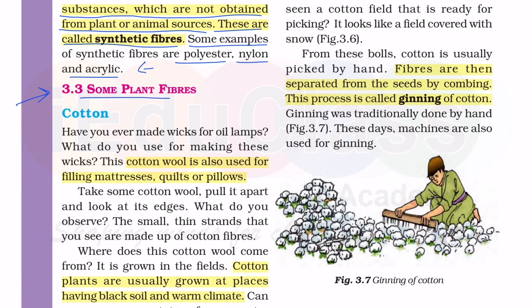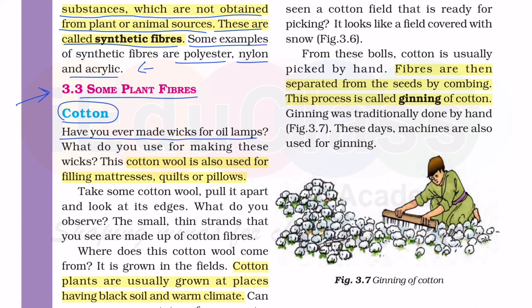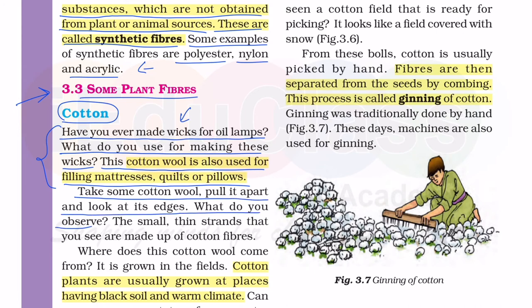Next topic - some plant fibers. Have you ever made wicks for oil lamps? This cotton wool is also used for filling mattresses, quilts and pillows. Take some cotton wool, pull it apart and look at its edges - what do you observe? The small thin strands that you see are made up of cotton fibers. अगर आप थोड़ा सा cotton अपने हाथ में लेके उसके edges को देखें तो आपको fiber वाले strands दिखाई देंगे।